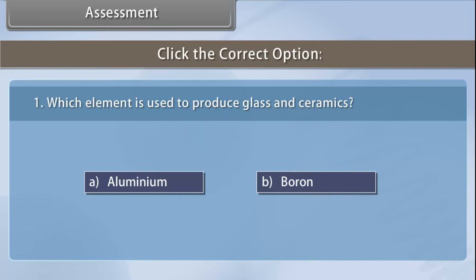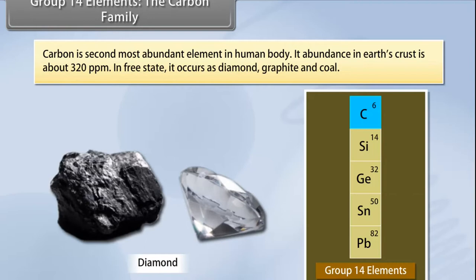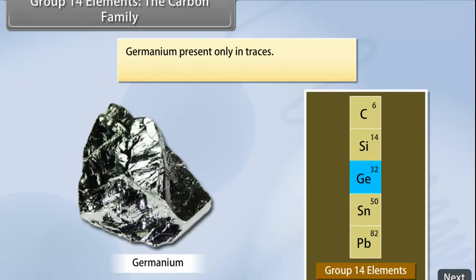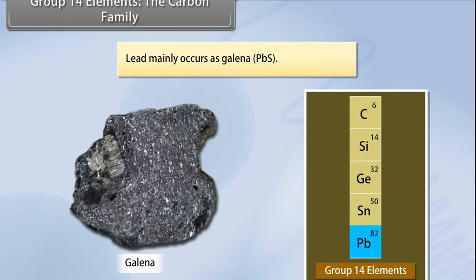Group 14 elements — the carbon family: Carbon is the second most abundant element in the human body; its abundance in Earth's crust is about 320 ppm. In free state it occurs as diamond, graphite, and coal. Silicon is the second most abundant element in Earth's crust, present as silica and silicates. Germanium is present only in traces; tin occurs mainly as cassiterite (SnO₂); lead mainly occurs as galena (PbS).